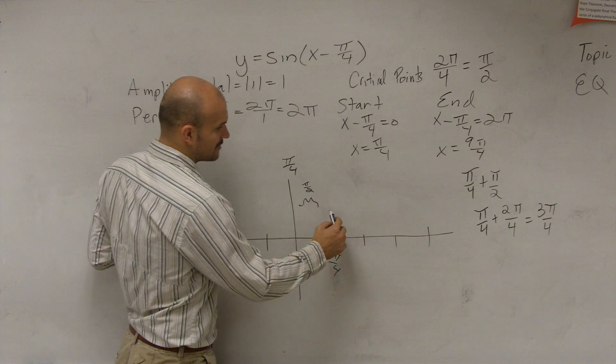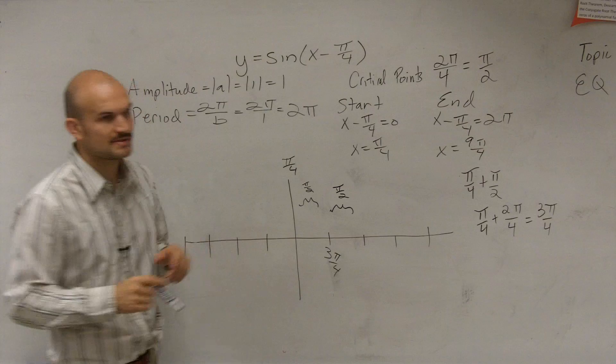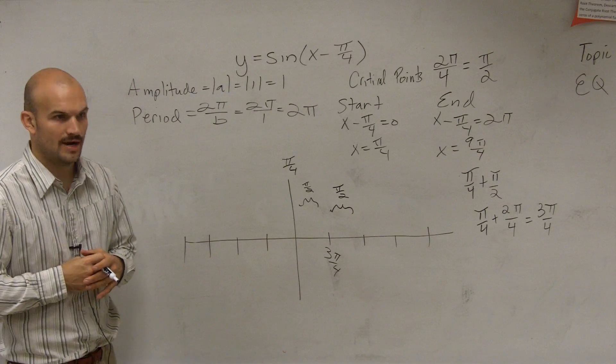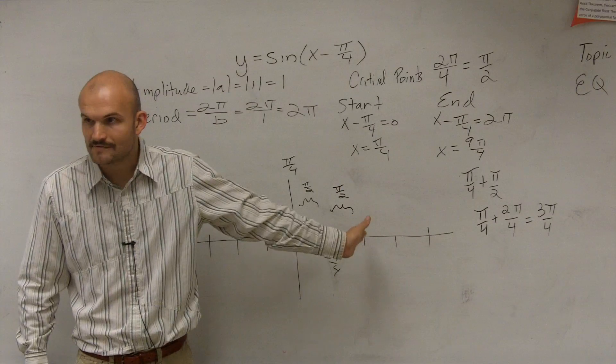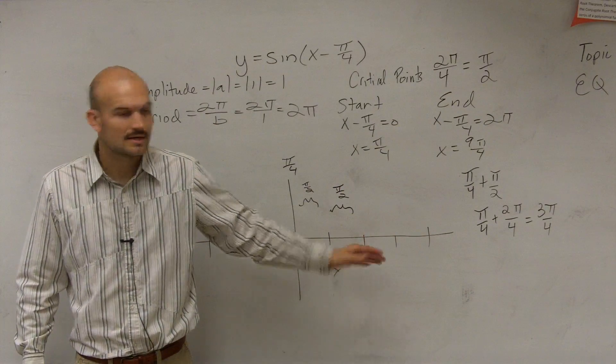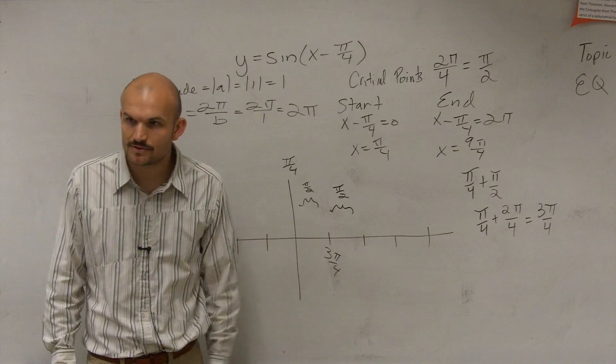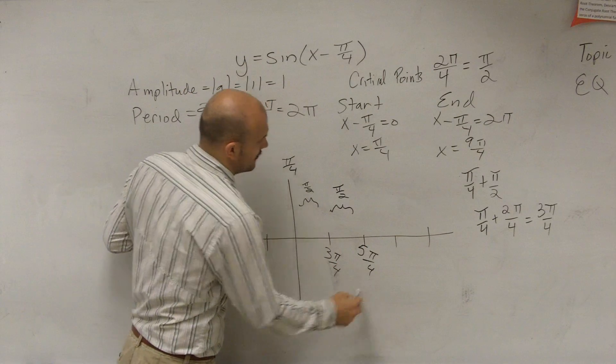Then, to get to the next point, you have to add, again, another π halves, right? Because the distance between every critical point is π halves. Does everybody see that? So again, to add 3 fourths, we have to add another π halves, which is going to be 5π over 4.